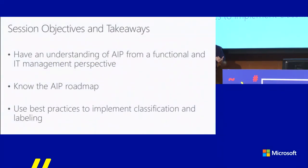I have a couple of objectives for today. In the next 45 minutes, I'll be talking about Azure Information Protection. When you leave the room, I hope that you know at least the basics of how it works from a user perspective, but also from the management perspective. I'm also going to talk about the AIP roadmap announced at Ignite last September, and in the end I'll have some tips on how to implement AIP within the organization.